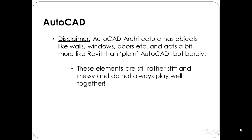My little disclaimer here is that I'm really talking about standard AutoCAD. There are different versions such as AutoCAD Architecture, which does have objects like walls, windows, and doors that, at least on the surface, act a bit more like Revit than plain AutoCAD. You can even set up parameters, but it's really just on the surface — these elements are relatively stiff and messy and don't always play well together, and are definitely not as sophisticated as Revit. What I'm really talking about is working from scratch using very plain AutoCAD.